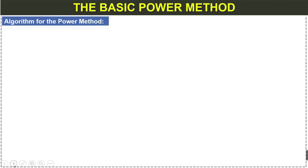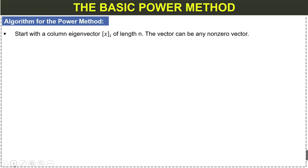First we discuss the algorithm for the power method, and then we will solve an example using the basic power method. Step one: start with a column vector xi of length n — this is our initial vector. The vector can be any non-zero vector.